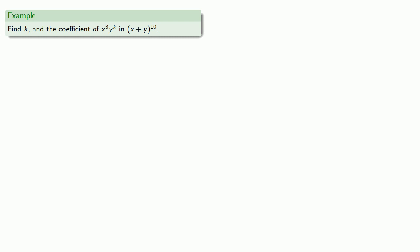So let's find k and the coefficient of x³y^k in the binomial expansion (x + y)¹⁰. To get x³y^k, we have to choose x exactly three times. Remember, we have to choose a term from each factor. And since there are ten factors, we have to choose ten terms altogether. So if three of them are x, then 10 - 3 = 7 of them must be y.